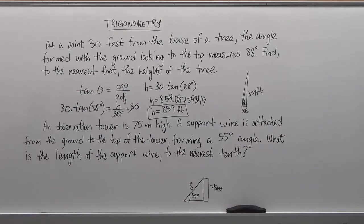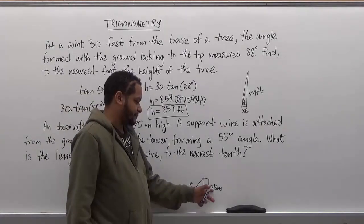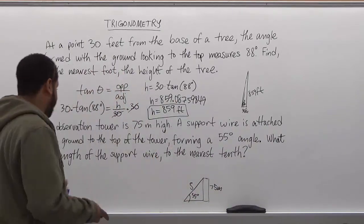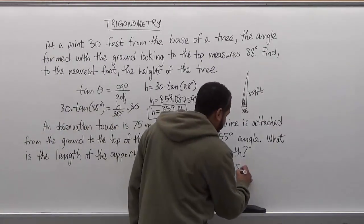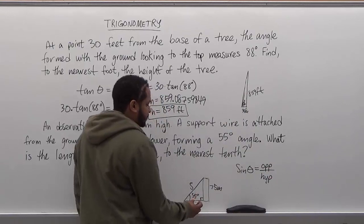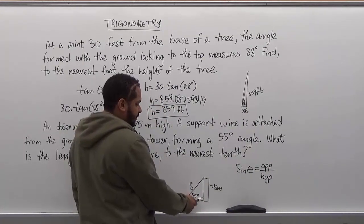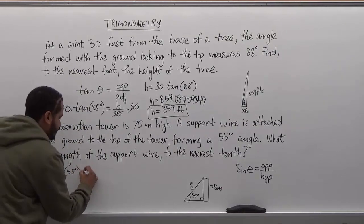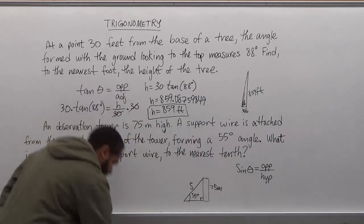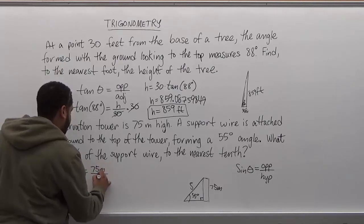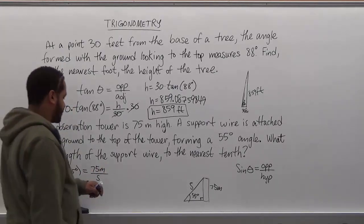To solve this we use one of the trigonometric functions. We have the opposite side of the angle and the hypotenuse, so the most convenient function to use is sine — sine of theta equals the opposite side over the hypotenuse. The hypotenuse is opposite the right angle, which is the S side. So: sine of 55 degrees equals 75 meters over S.